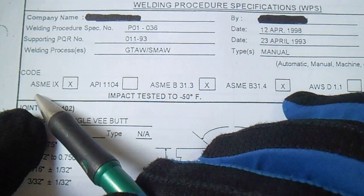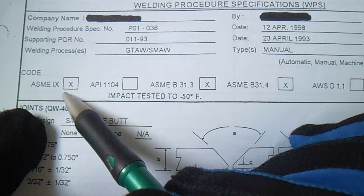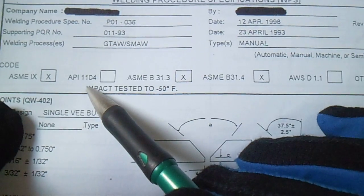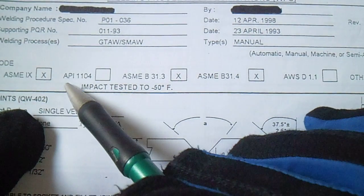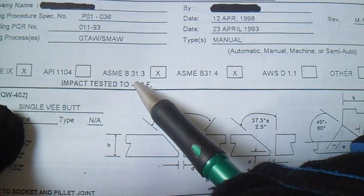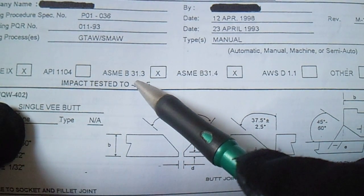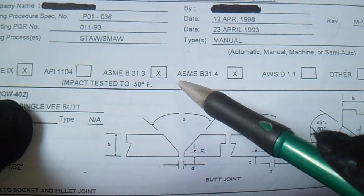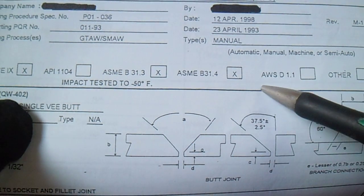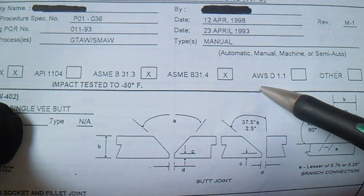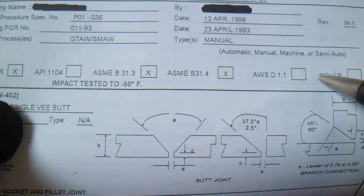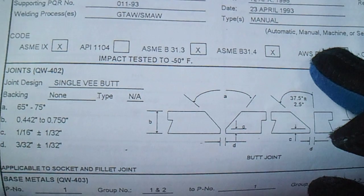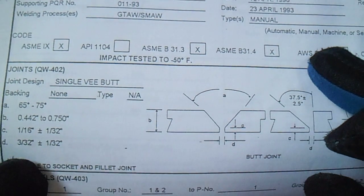The applicable codes include ASME Section 9, API 1104, ASME 31.3, ASME 31.4, and AWS D1.1.